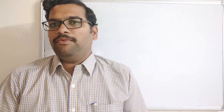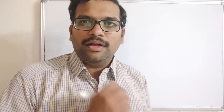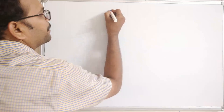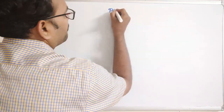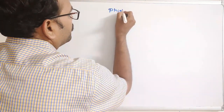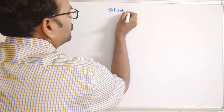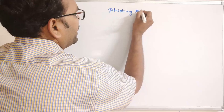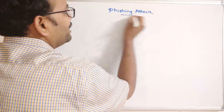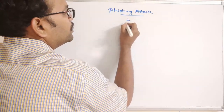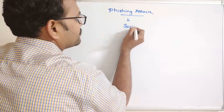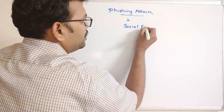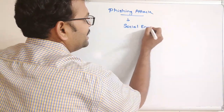Hello friends, welcome back to our channel. In today's session we'll discuss one more type of attack in ethical hacking — that is a phishing attack. Phishing attack is one category of social engineering attacks.